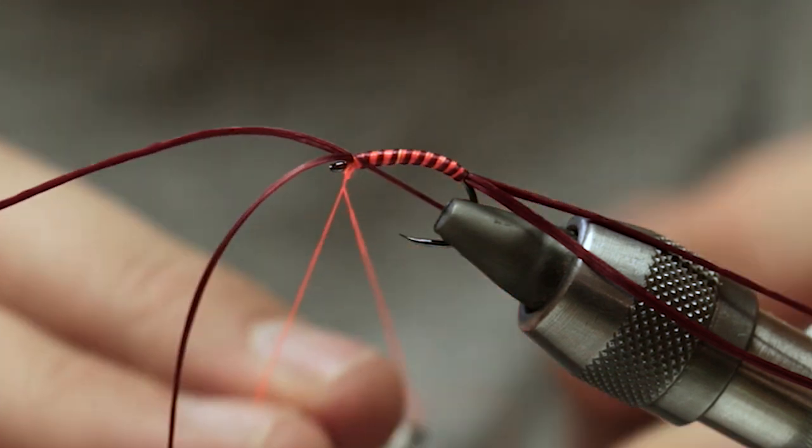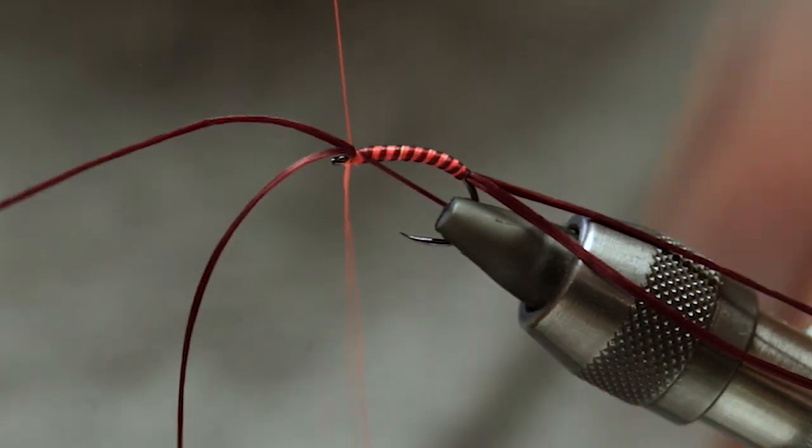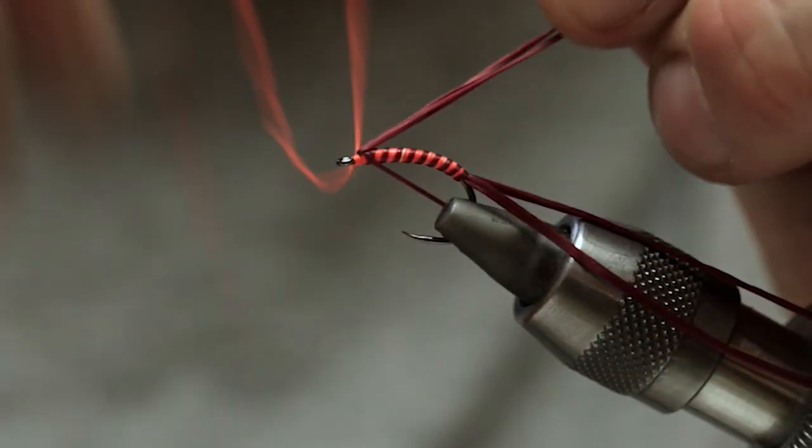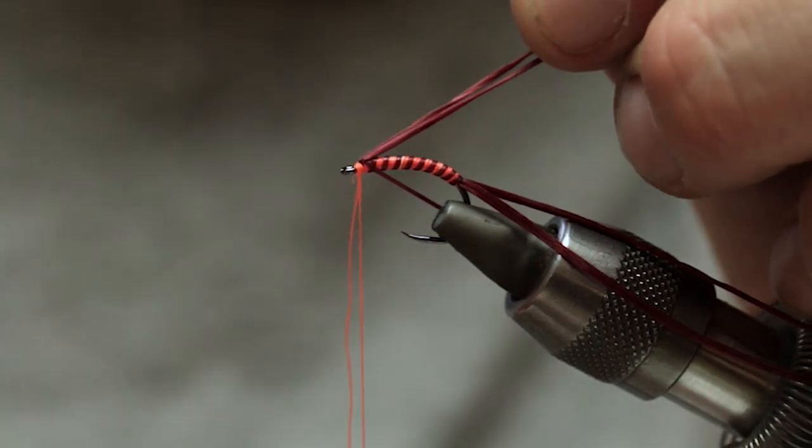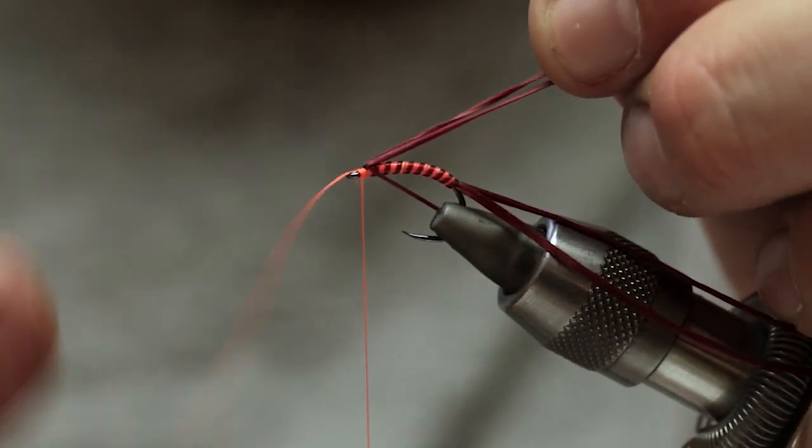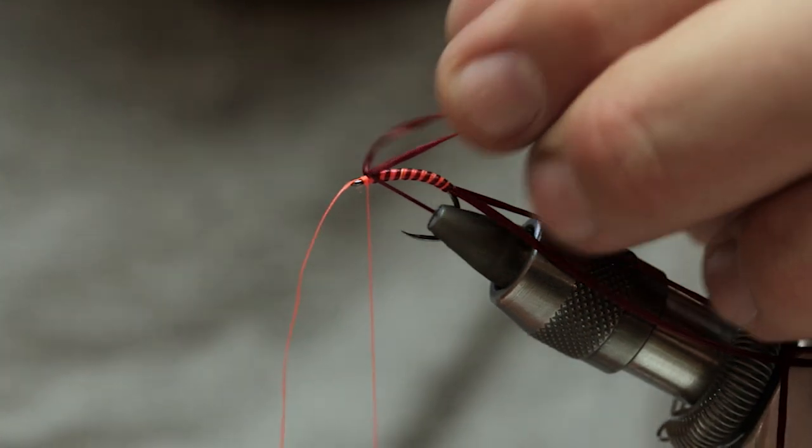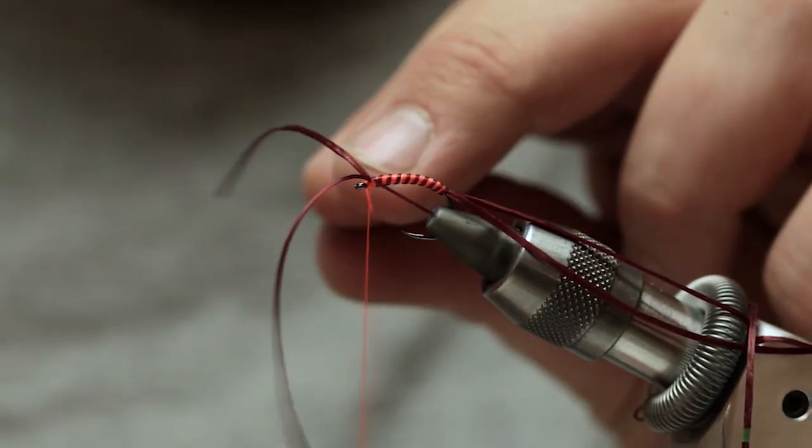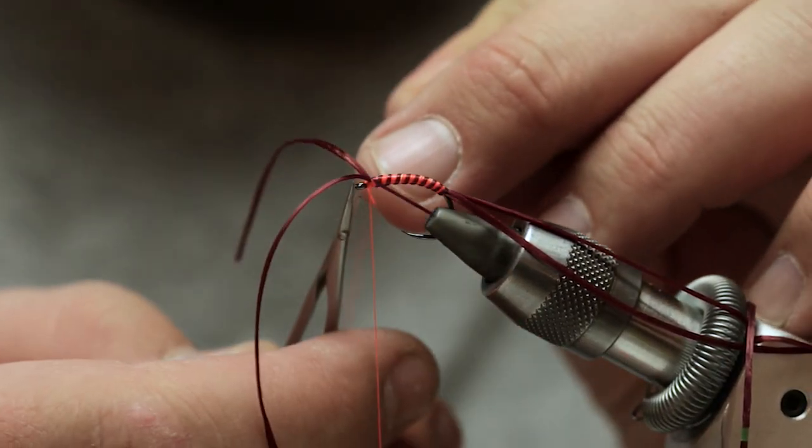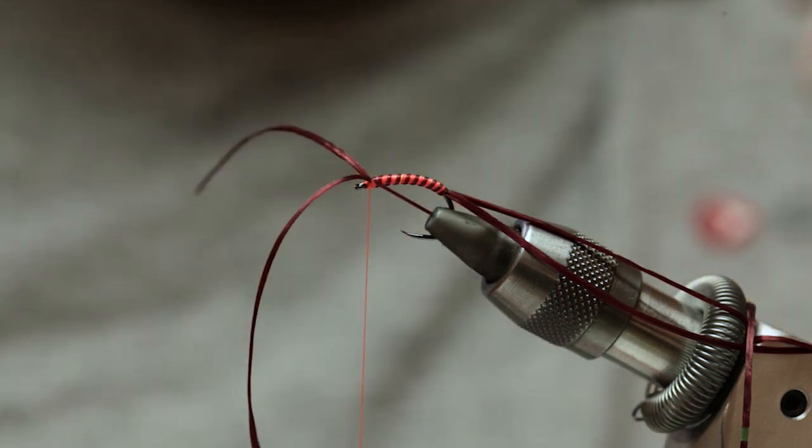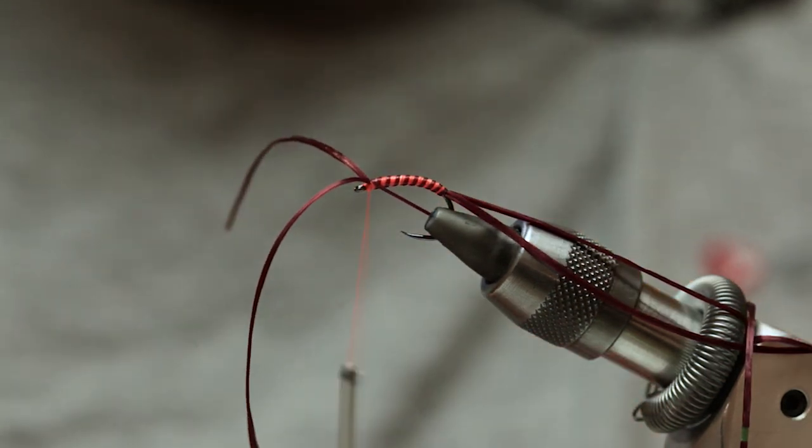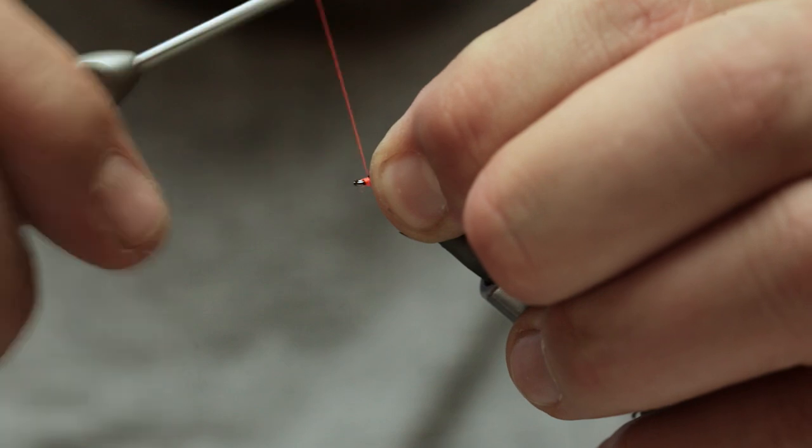Wrap around twice. Pull back the legs. Cut off your waste end.